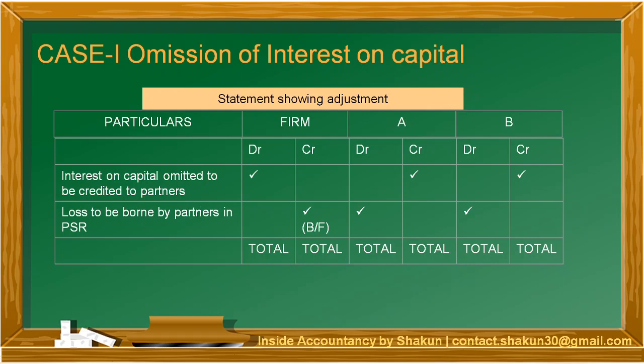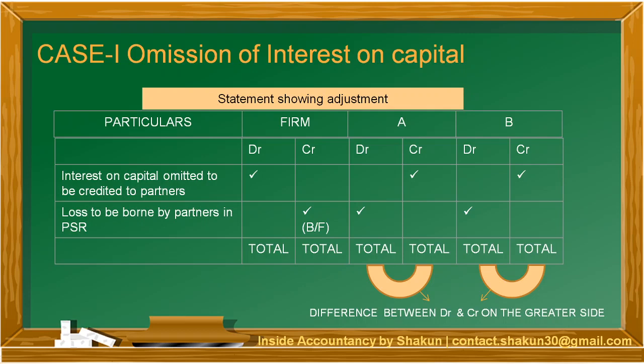The next step is to find out the total of all the DR and CR in the partners' capital accounts — total of A's DR, A's CR, B's DR and B's CR. After finding the total, find the difference between DR and CR and write it on the greater side. If A's difference comes on the debit side, A's account is to be debited with that amount. If B's difference comes on the credit side, B's capital has to be credited with that amount. This was just a format explanation — an example will make it clearer.